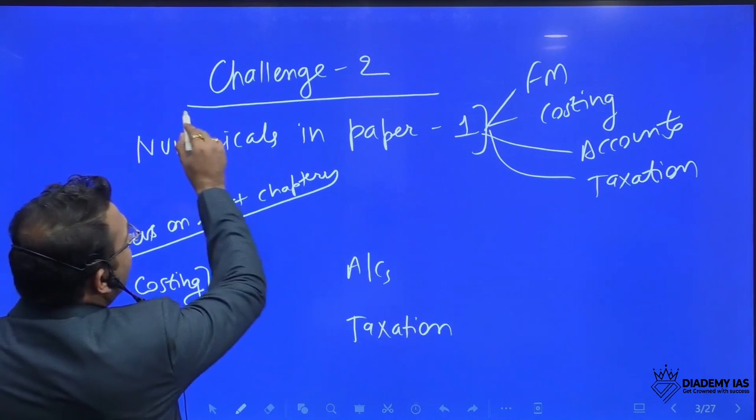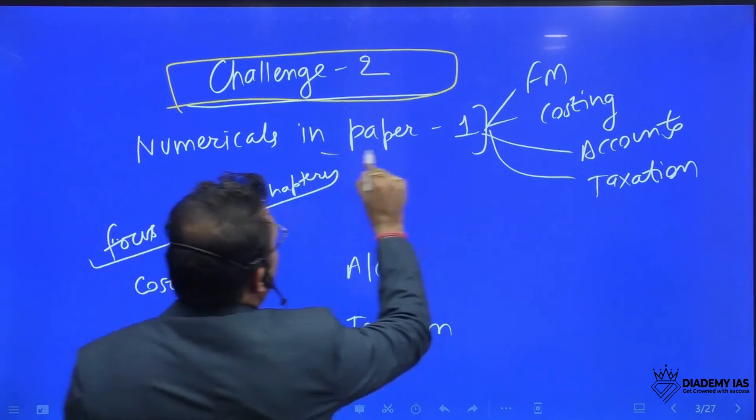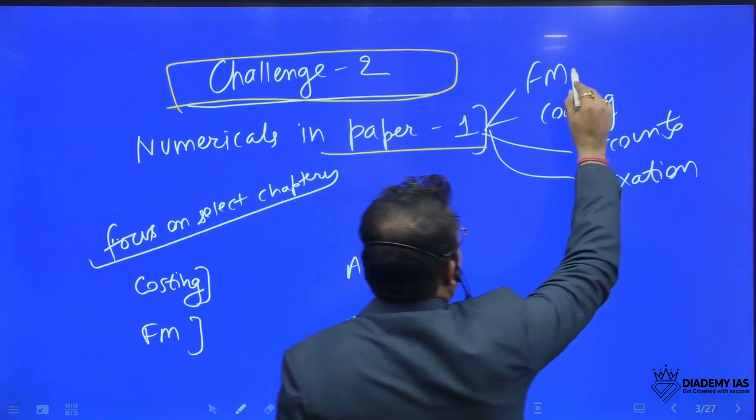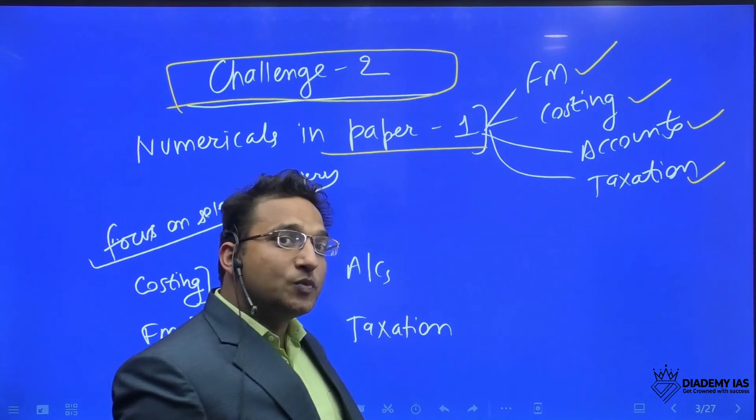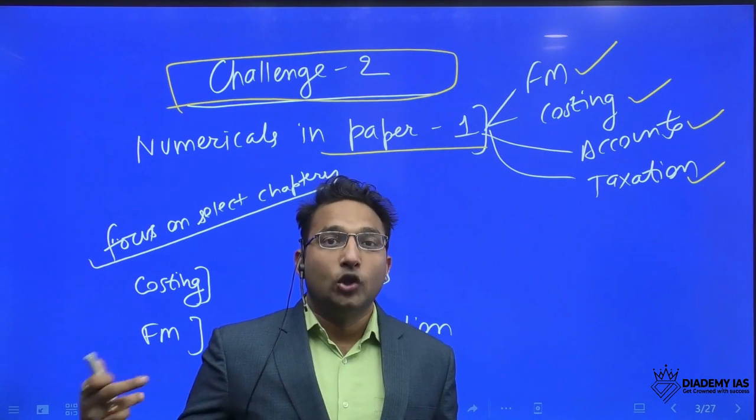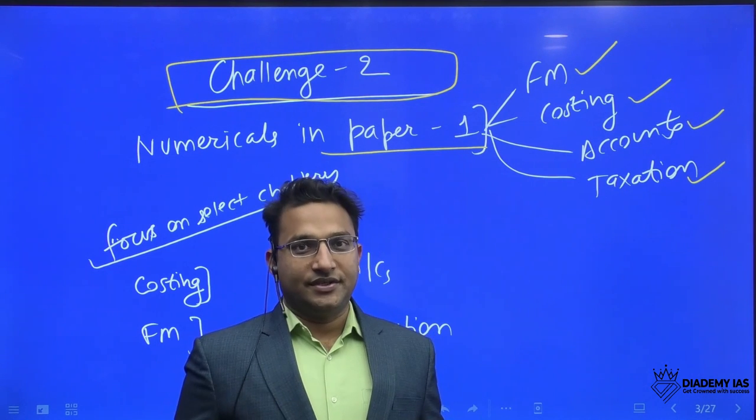Number two, the second challenge is numericals in paper one especially. So we have numericals in financial management, costing, accounts, and taxation. Especially those people who are from the non-CA background, they face the problem in the numerical. Now, how to overcome this?